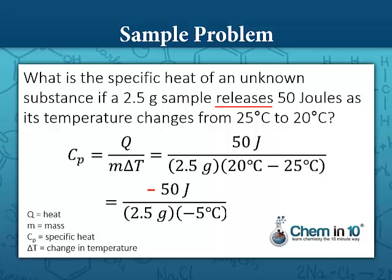I take 50, I divide by 2.5 and 5, and I get 4 joules per gram degree Celsius. Notice we carry over the units, joules divided by grams divided by degree Celsius.